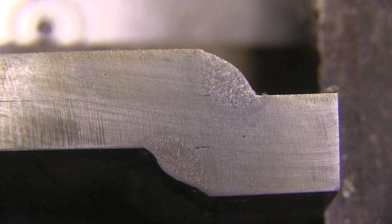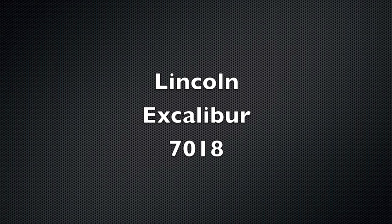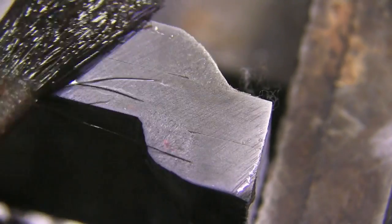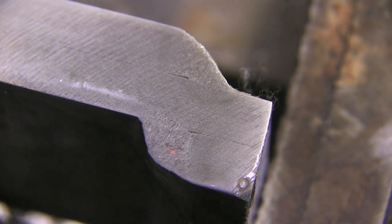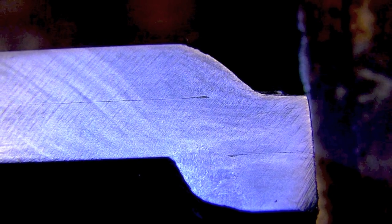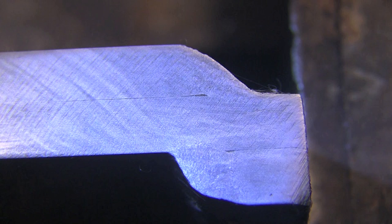Let's take a look now at the Lincoln Excalibur 7018. It looks a little different as far as the structure of the weld. The weld nugget is not as discernible. Maybe the grain is a little bit more refined, maybe not, I don't know, but it looks fine.